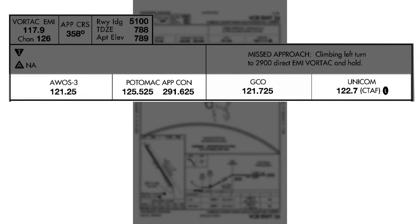Down below on the bottom briefing strip, you have communications information relevant for the approach. On the left is weather on 121.25, approach control — Potomac approach on 125.52 — and GCO, a ground communication outlet, which is basically a way to contact air traffic control from the ground for a clearance or to close an IFR flight plan. Then you have the UNICOM. This is an uncontrolled airport, so the UNICOM and CTAF are on 122.7. The L symbol means you can control lighting using that frequency as well.